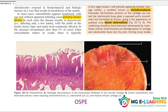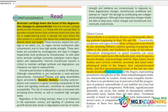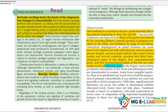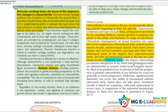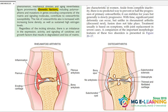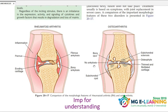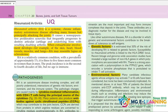You need to read the pathogenesis. You get Heberden's nodes in the fingers, which represent prominent osteophytes at the distal interphalangeal joints. You need to understand the characteristics and the difference between rheumatoid arthritis and osteoarthritis — understand the diagram.